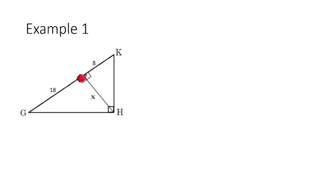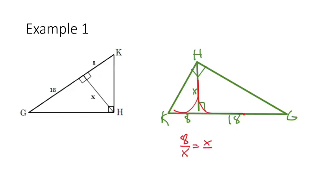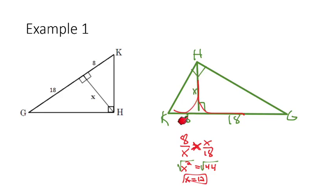The first thing that throws us off about this question is the triangle has been flipped upside down, so let me draw it the other way. Once I've oriented it the same way as our previous discussion, we can identify which relationship applies. This is a heartbeat situation: 8 over X equals X over 18. Cross-multiplying gives X squared equals 144. Taking the square root of both sides, X equals 12. So this length is 12 — the geometric mean of 8 and 18.